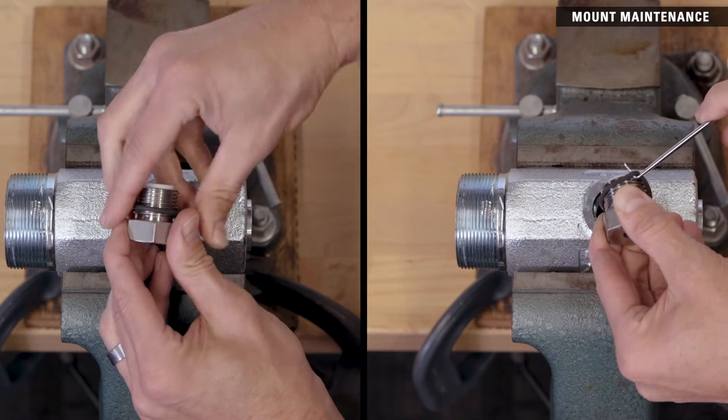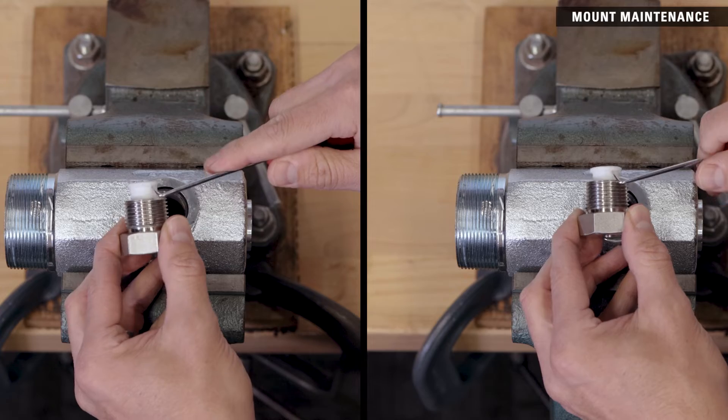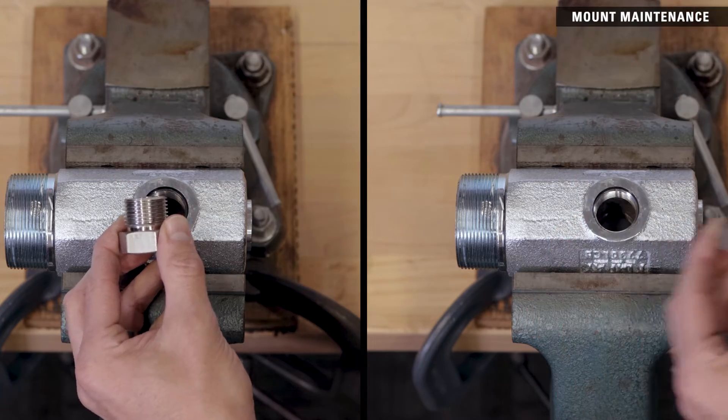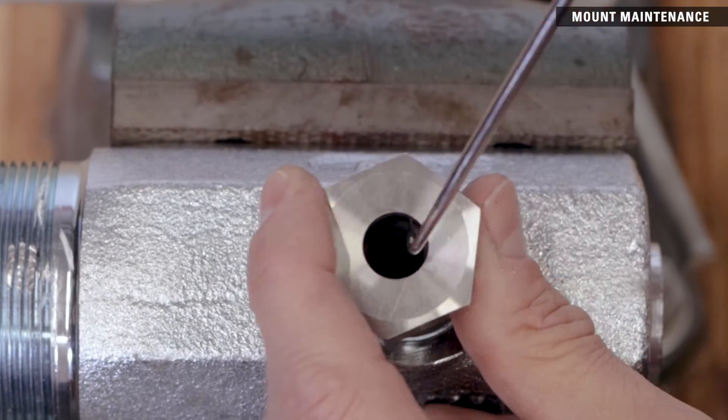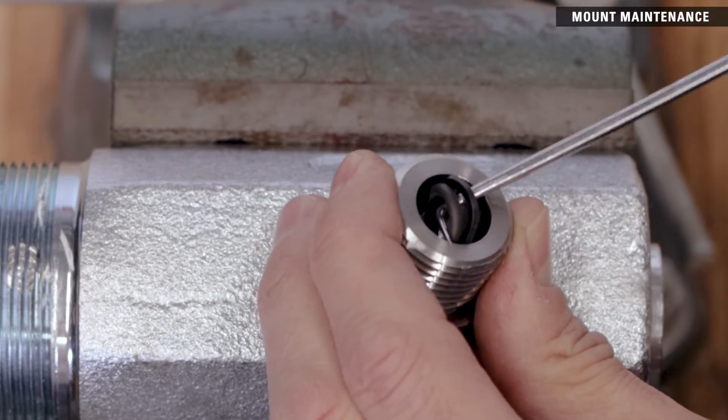Use a pick to remove and discard the outer o-rings. Remove and discard the flanged bearings from both hubs. Use a pick to push out the o-ring and backup ring from inside both hubs. These can be discarded.